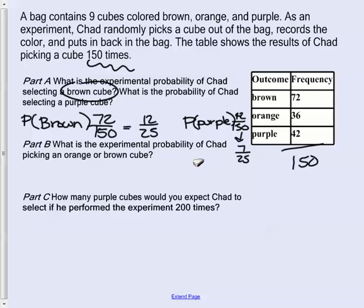What's the experimental probability of Chad picking an orange or a brown cube? Well, if we look at this, experimental probability would be orange and brown. So we're looking here, we're going to add 72 plus 36, and we get 108. So the probability of orange or brown would be 108 out of 150. We can simplify that, though. Both these numbers are divisible by 6, so we get 18 over 25.